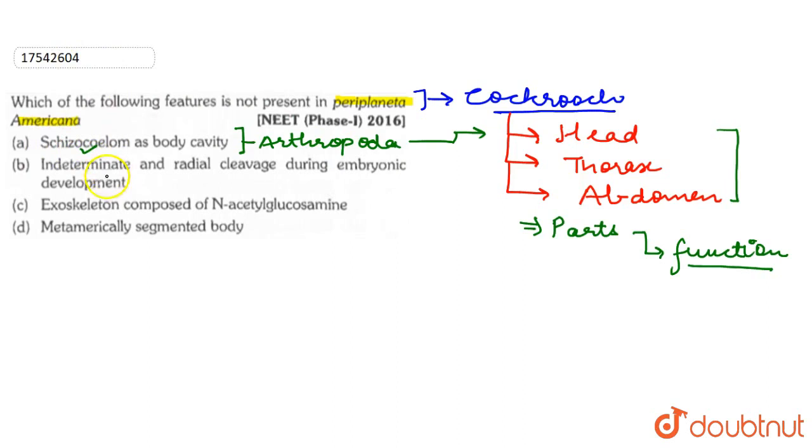If we talk about Periplaneta embryonic development, this statement about radial cleavage - the radial cleavage is not found. It is always consistent and present in the urchins categories. In this way, radial cleavage does not help the embryonic development. In fact, typically it consists of the deuterostomes region.